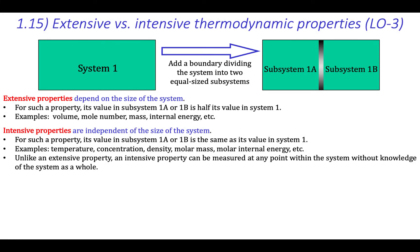The volume, mass, and mole number of each of the subsystems is half of its value in the original system. In other words, volume, mass, and mole number all depend on the size of the system and are therefore extensive properties. In general, the value of an extensive property in subsystem 1a or 1b will be half its value in System 1.